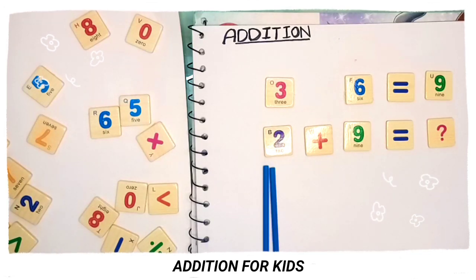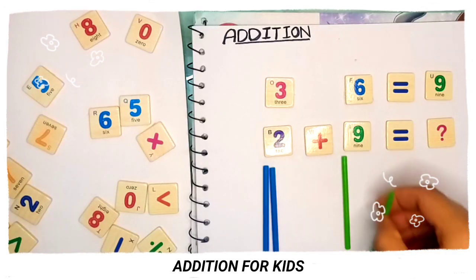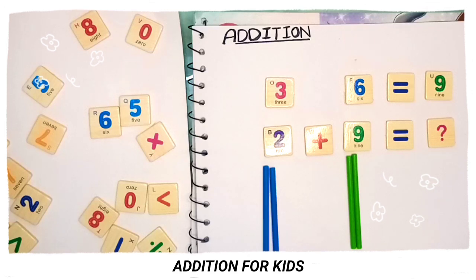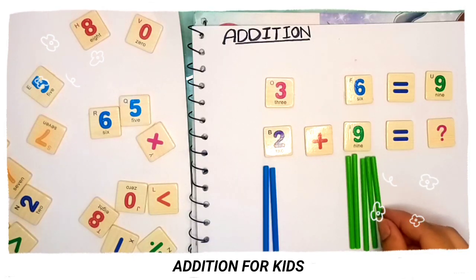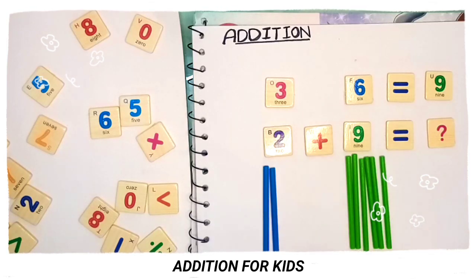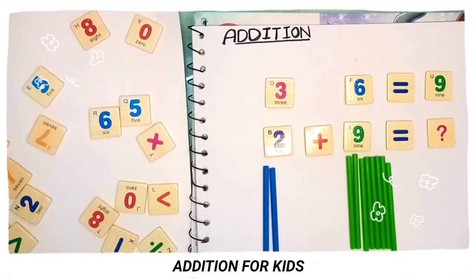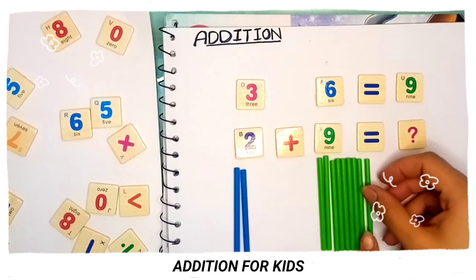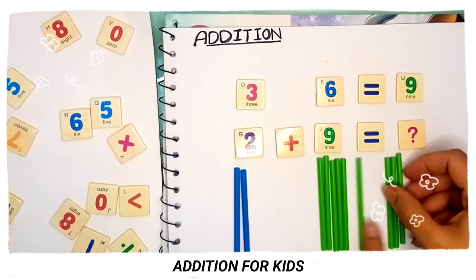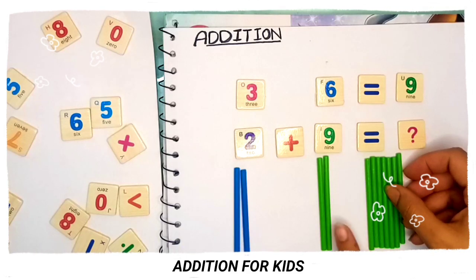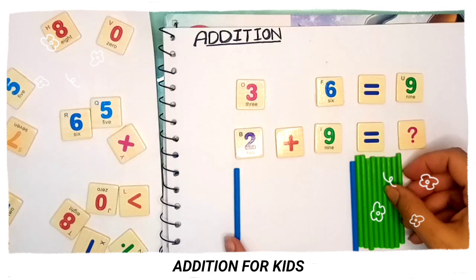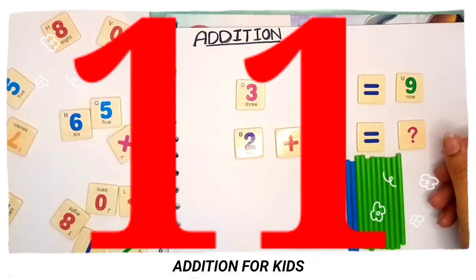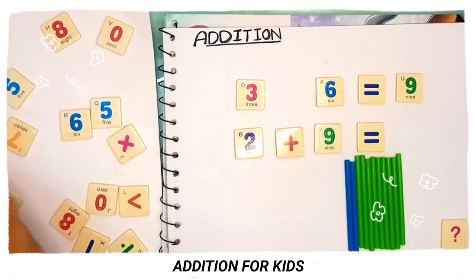The second number is nine, so we take nine sticks: one, two, three, four, five, six, seven, eight, nine. Now we will count the total number of sticks: one, two, three, four, five, six, seven, eight, nine, ten, and eleven. So the answer is eleven. Two plus nine is equal to eleven.